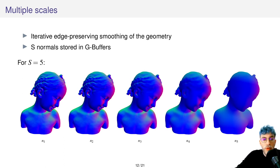We store these normals in GBuffers in practice. So here for S equals 5, we end up with 5 normal fields, from the finest here to the coarsest here.